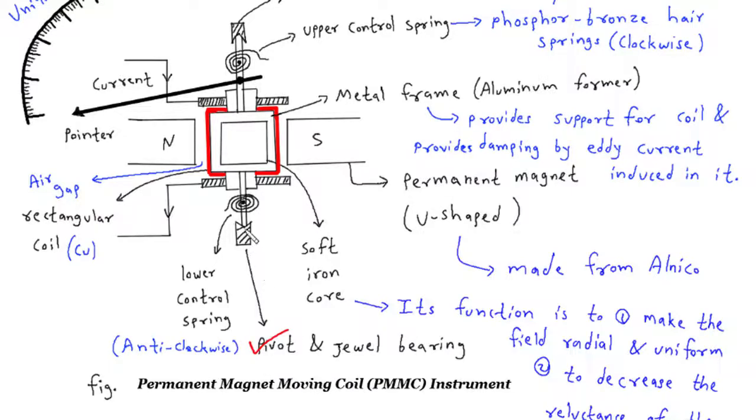Pivot and jewel bearing lower side: Similar to the upper side bearing, the lower side pivot and jewel bearing provide a low-friction rotational axis for the coil and pointer assembly. It ensures smooth movement and reduces any friction that could affect the accuracy of the meter.